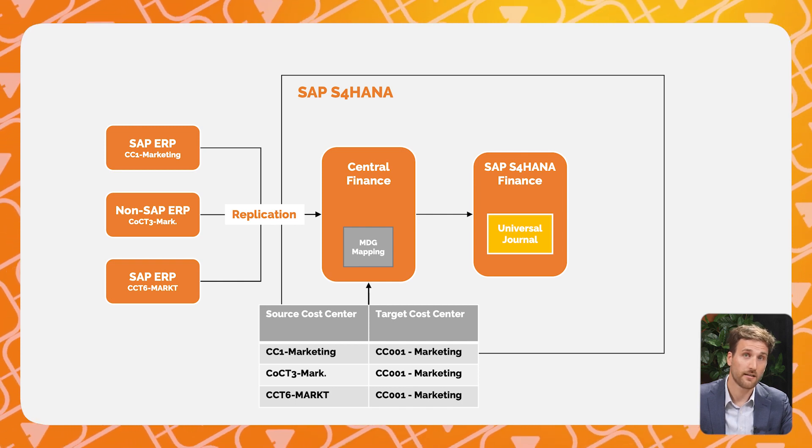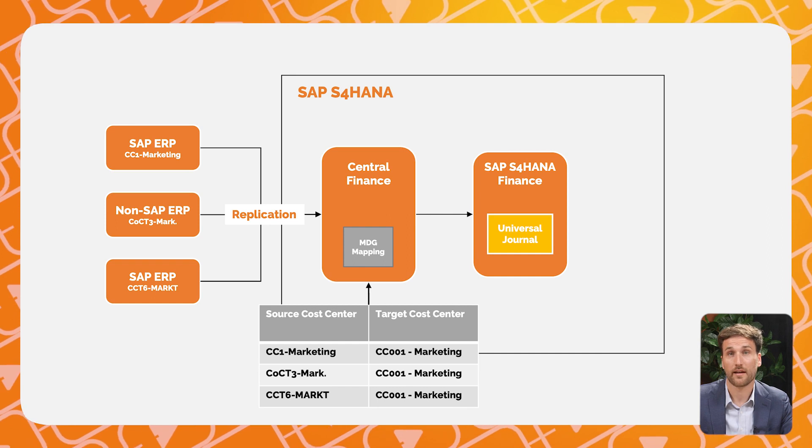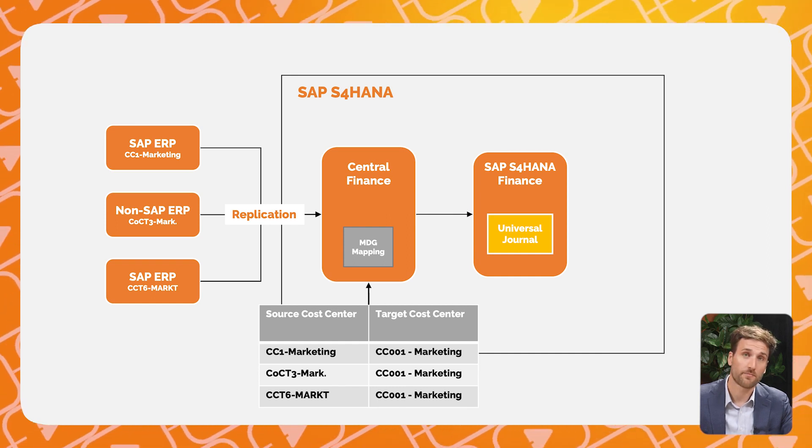However, over the years you might have used multiple data definitions in your source systems — think of different codes for cost and profit centers. You might want to map these data objects from a business perspective in order to create your new single source of truth. This can easily be done in central finance, making use of either an embedded lite version or full-scale licensed version of Master Data Governance, also known as MDG.